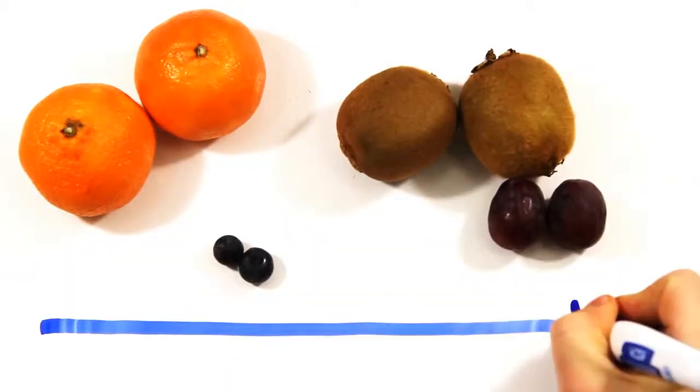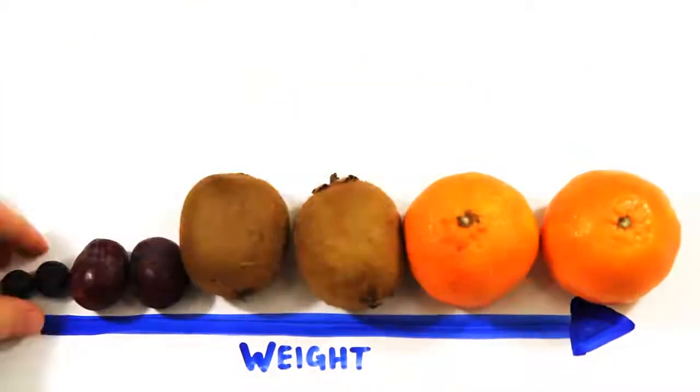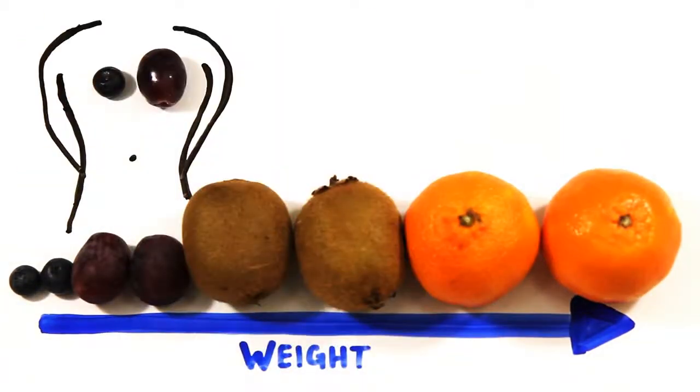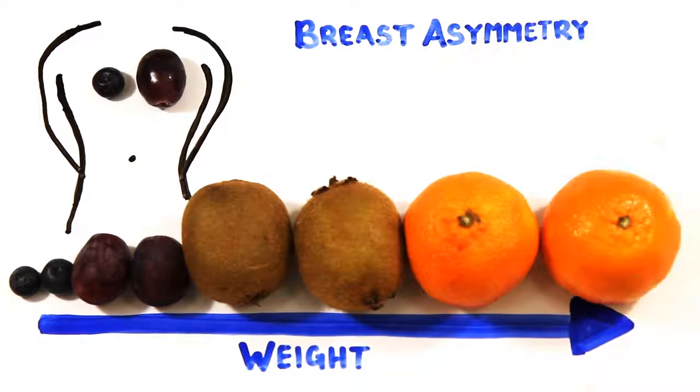Breasts come in all shapes and sizes, and though there is a positive correlation between breast size and weight, genes also play a crucial role in the size of boobs. 50% of the time, one breast is larger than the other, most commonly the left boob, known as breast asymmetry.